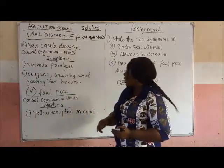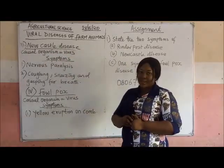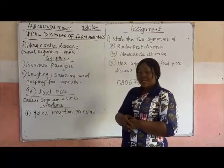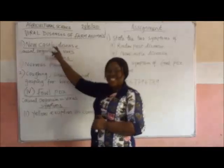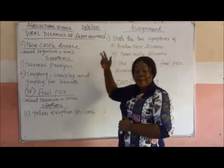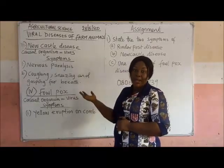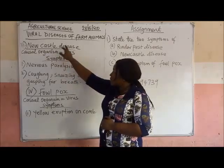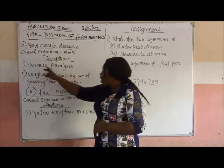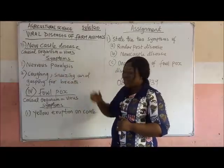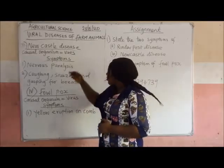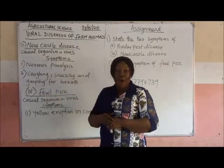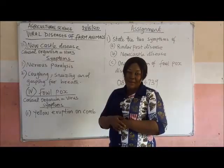Now we are going to look at Newcastle disease. What is the cause of Newcastle disease? It is caused by a virus. The mode of transmission for Newcastle disease is the same as for Rinderpest and Foot and Mouth disease. The symptoms of Newcastle disease: the first one is nervous paralysis, such as twisting of the neck. The next one is coughing, sneezing, and the animal will be seen gasping for breath — that is, inability to breathe very well.